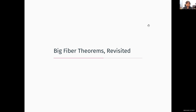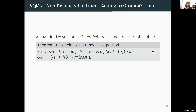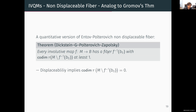Let us revisit the big fiber theorems with our new tool. We find that Polterovich and Entov's non-displaceable fiber theorem is a symplectic analog of Gromov's torus theorem: using Gromov's center point theorem and the push-forward construction, every involutive map from a symplectic manifold M to some manifold V has a fiber where the co-dimension of the IVQM of the complement of the fiber is at least one. Displaceability of the fiber would have implied co-dimension zero due to the vanishing axiom, so in particular we recover non-displaceability as in Entov-Polterovich.